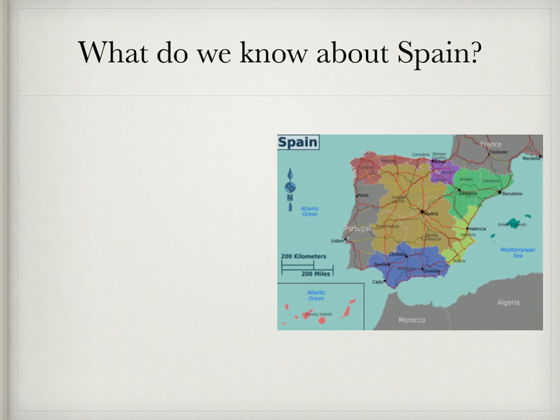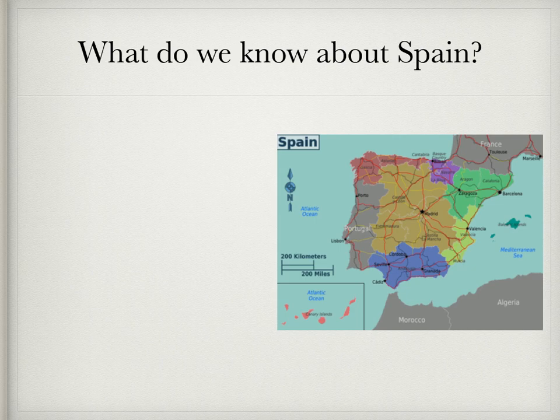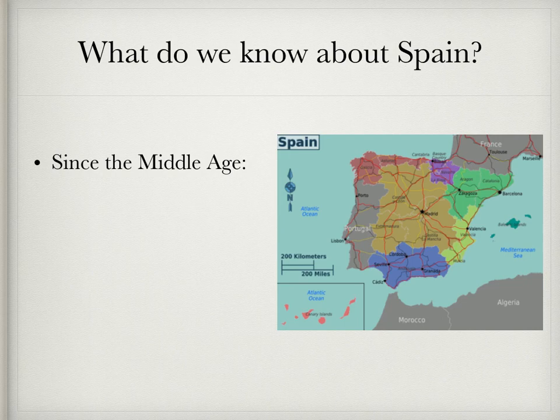Before we get into the long and short-term causes and the sides fighting this war, I want to take a couple minutes to discuss what we already know about Spain — where it's situated geographically, and what we know about Spain's long history. Let's dive back to the Middle Ages. This stuff you don't really need to know for paper 2, but it does add useful background information on Spain. Since the Middle Ages, Spain has been very Catholic and has been ruled by a monarchy.